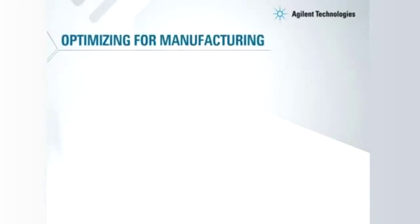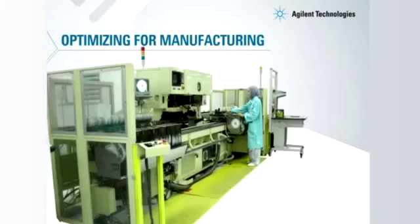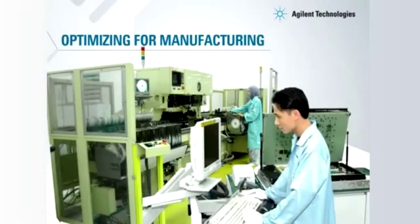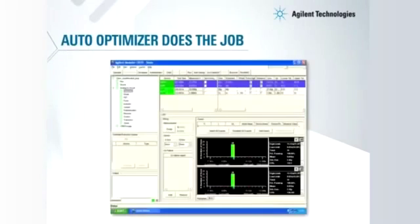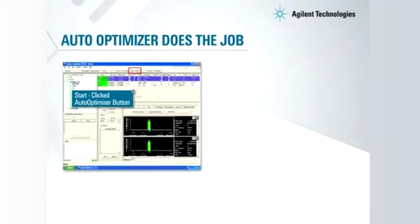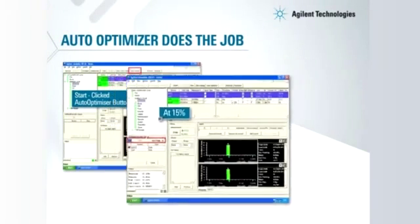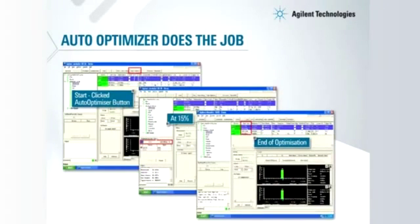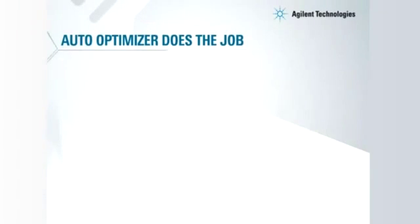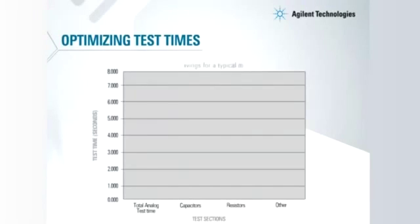In any manufacturing environment, test times are stretched by process changes, fixture wear and tear, and more, resulting in loss of optimal test speed as users tweak test parameters for their needs. With the auto optimizer, you do away with tedious reviews of analog tests — just a click of the button brings back the optimal test times.